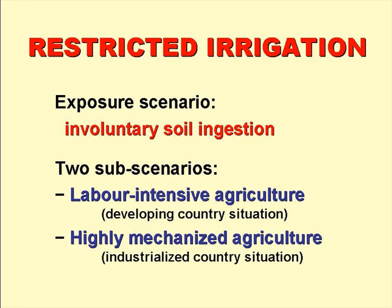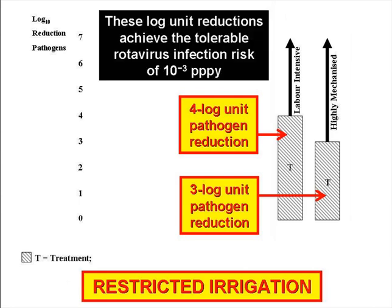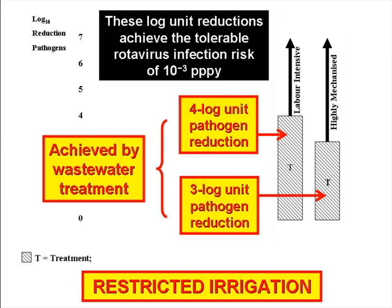For restricted irrigation, we use the exposure scenario of involuntary soil ingestion with two sub-scenarios: labour-intensive agriculture with exposure for 300 days a year, to represent a typical developing country situation, and highly mechanised agriculture — farmers driving tractors and wearing protective clothing such as gloves and boots — for 100 days a year, so the amount of soil ingested would be a lot less. A series of 10,000-trial Monte Carlo risk simulations were done, with parameter value ranges appropriate for the soil ingestion exposure scenario. The resulting required pathogen reductions were 3 log units for labour-intensive agriculture and 2 log units for highly mechanised agriculture. These reductions have to be achieved solely by wastewater treatment, because the field workers are directly exposed to the wastewater-contaminated soil.